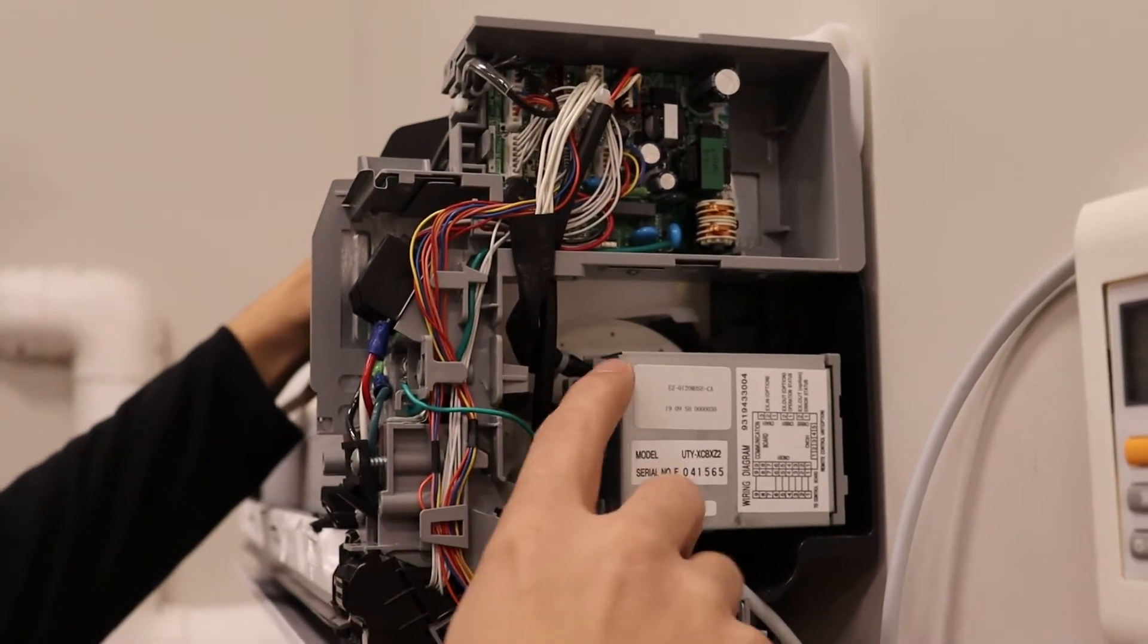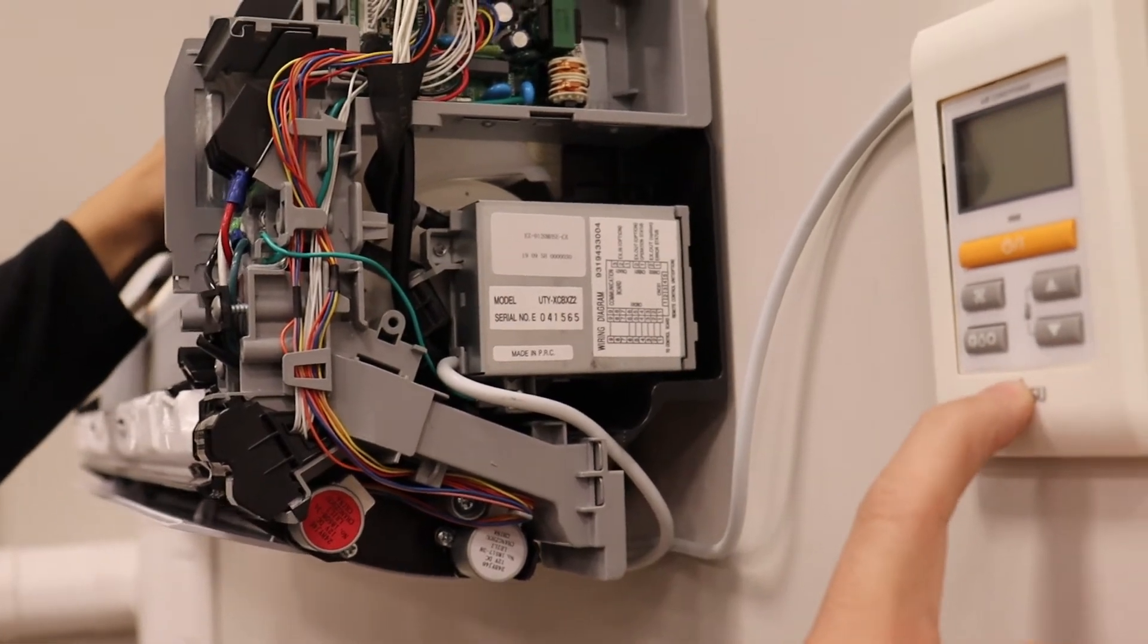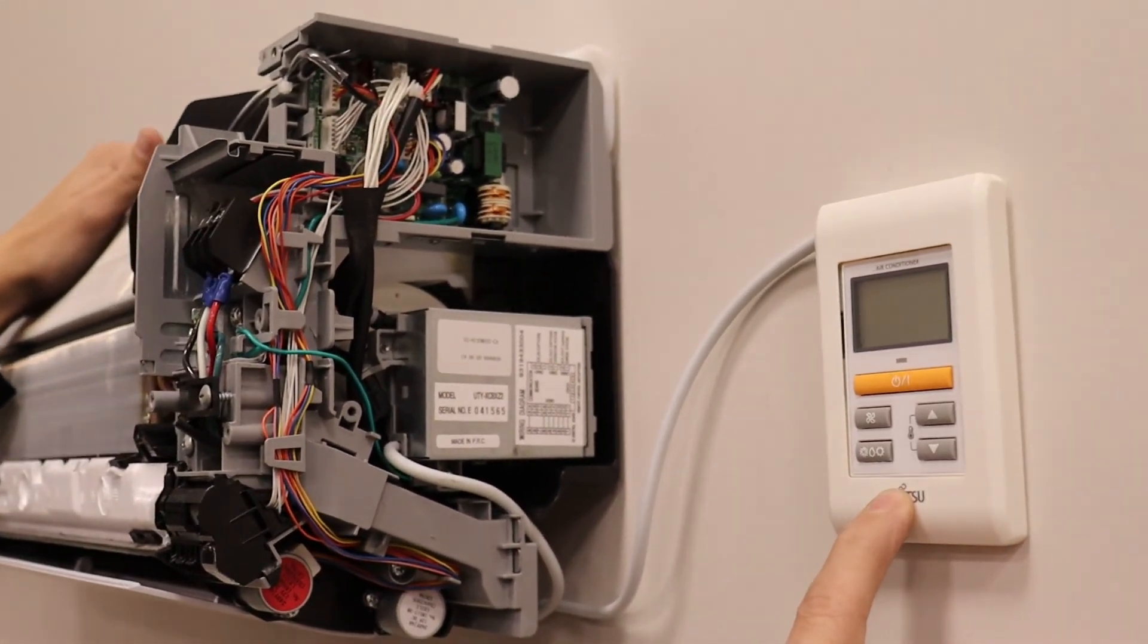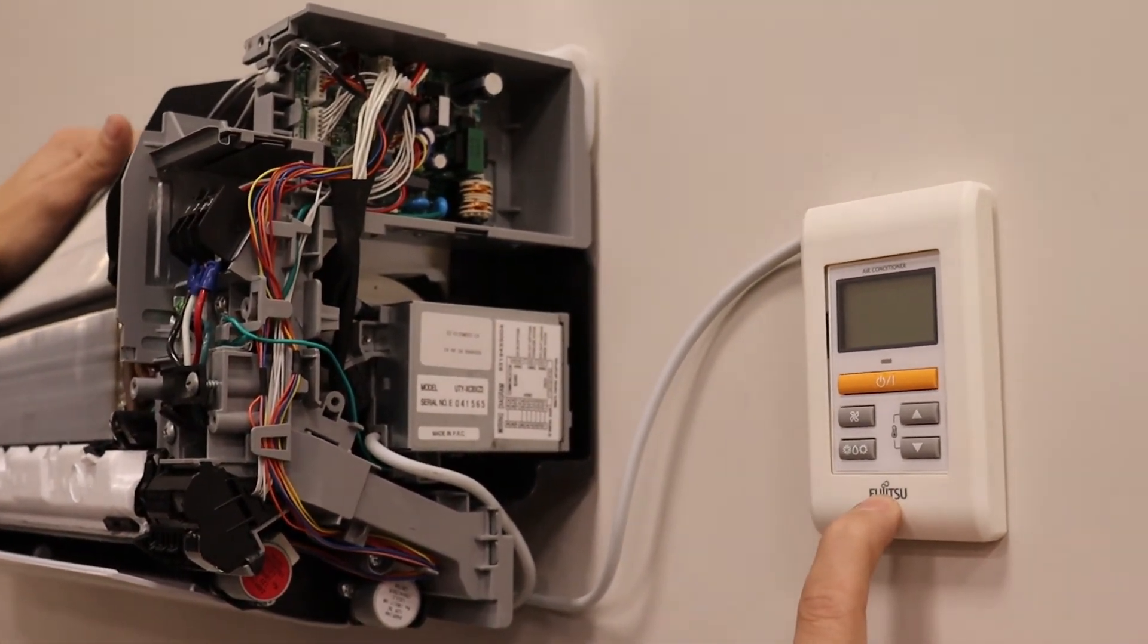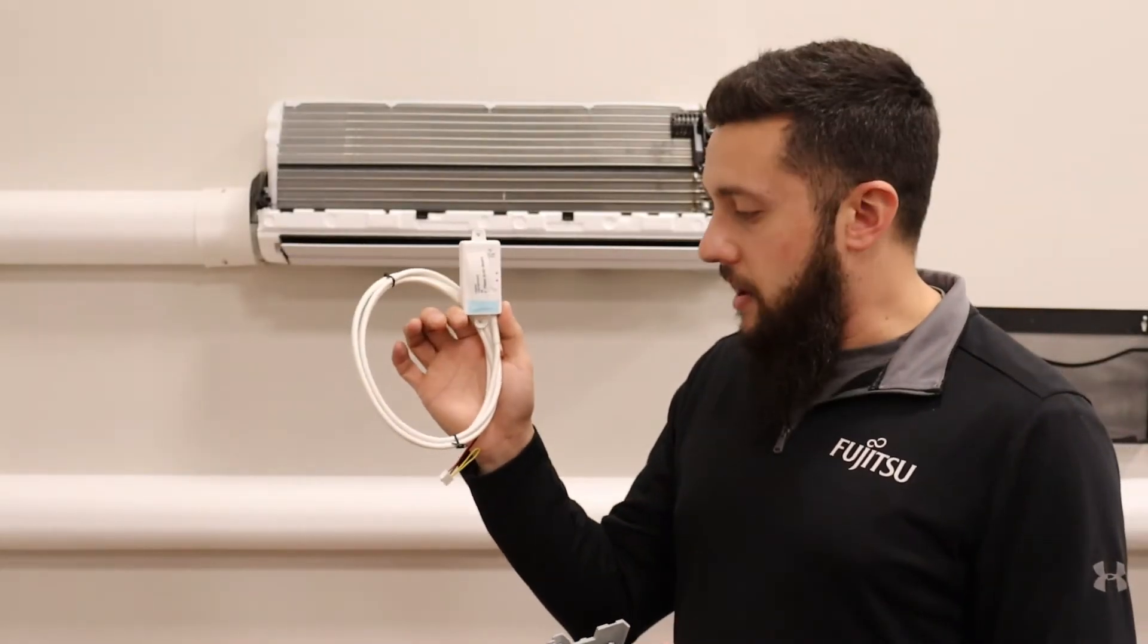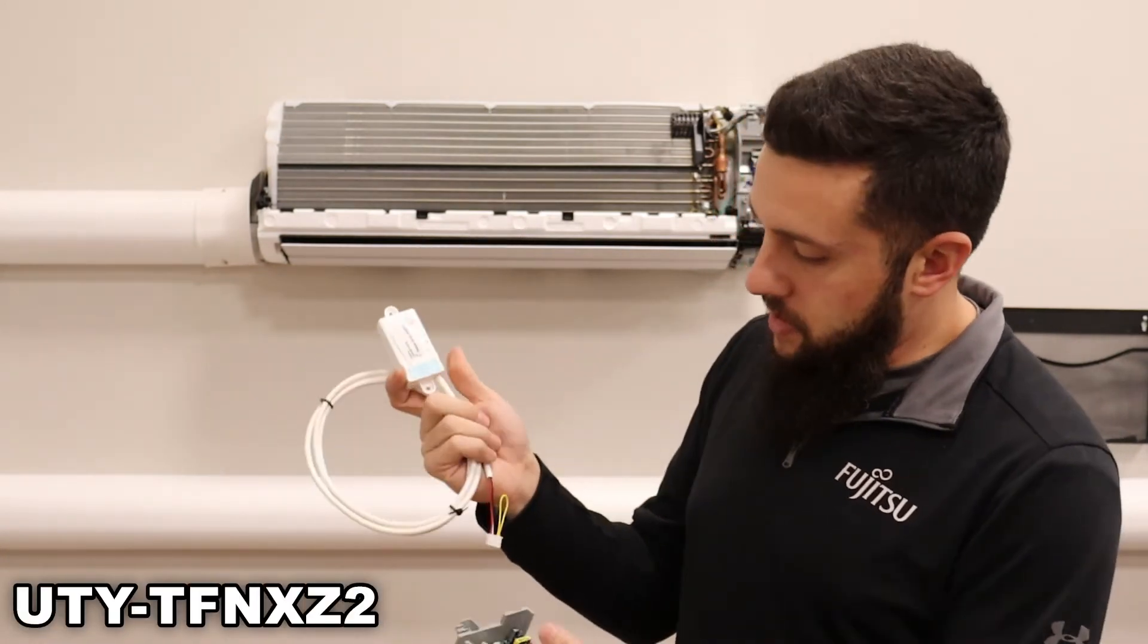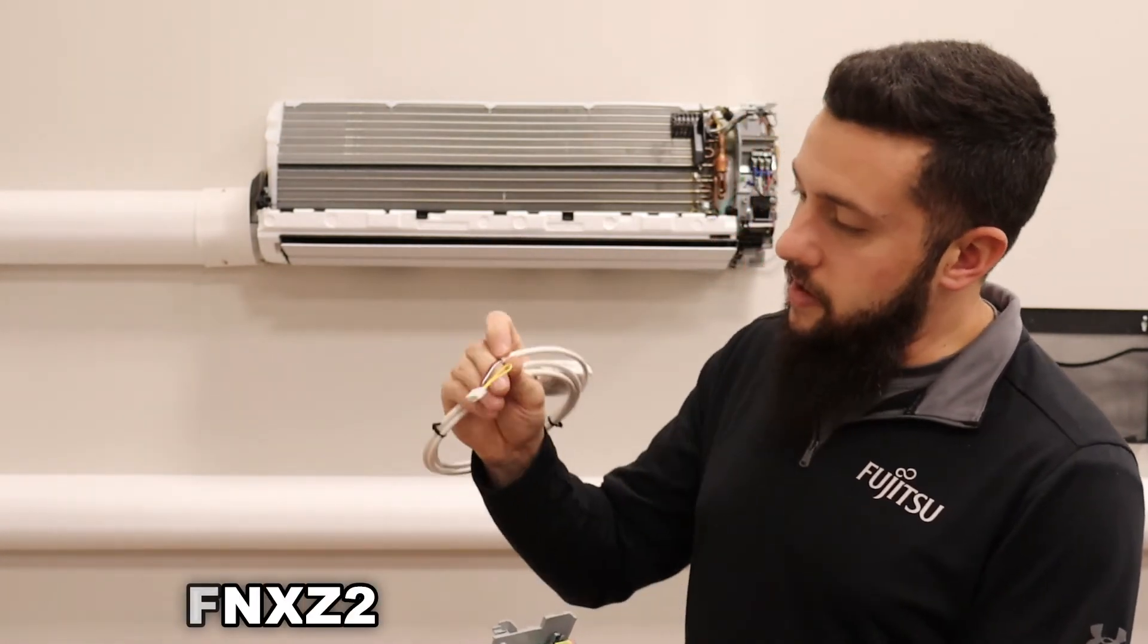And then from there we do have our thermostat wire, which is plugged into our wall controller right here. That would be the same plug if you were going to use a Wi-Fi adapter. This module right here is our Wi-Fi adapter that uses the FGL air app. This is the UTY TFN XZ2 model, and this right here is going to plug in again to the only spot it can plug into. Fits right in there.